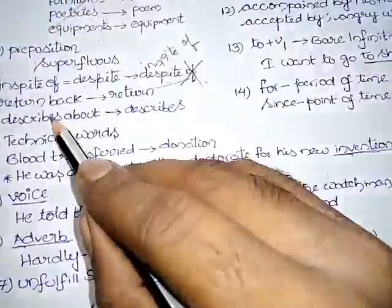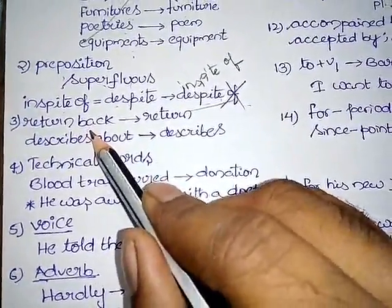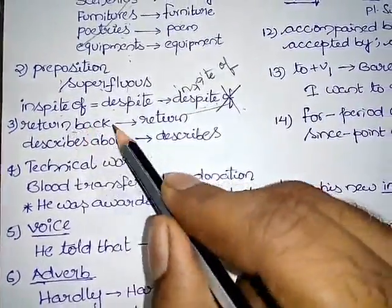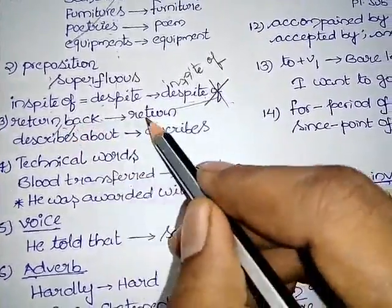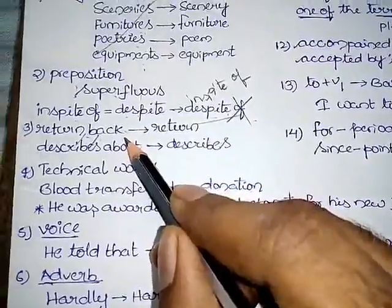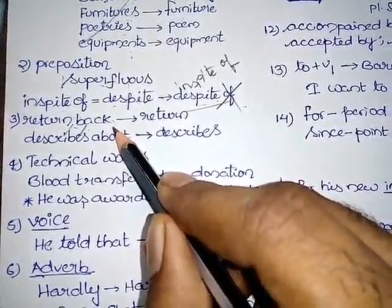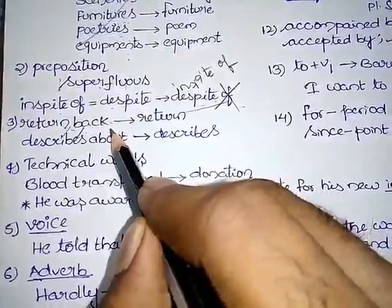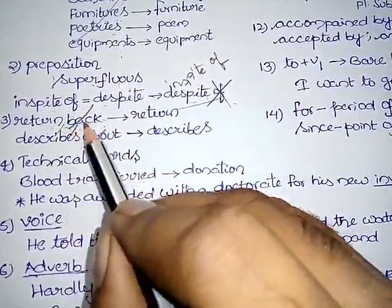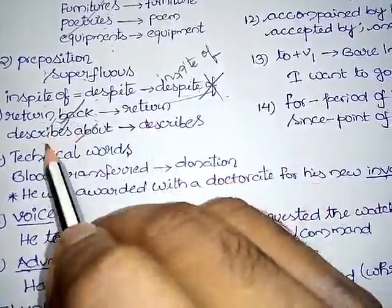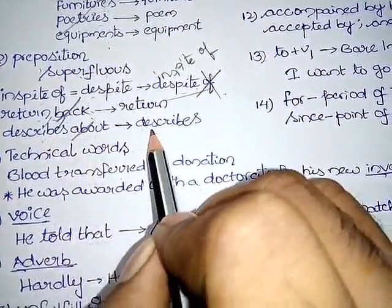Coming to the third topic, they give the same repetition. Return back - return means coming to back, and again back means back. So these types of errors should be common in CHSL. You simply mark it is wrong. The return back should be followed only by return, and describes about means describes.